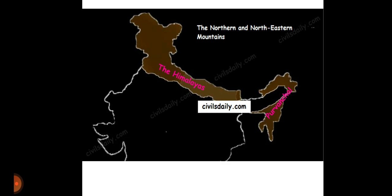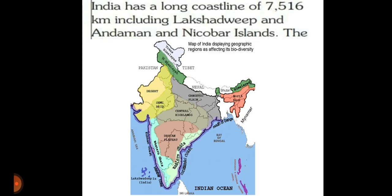The northern and northeastern mountains protect us from enemies and also we have got a great coastline. India has a long coastline of 7,516 kilometers including Lakshadweep and Andaman and Nicobar Islands.